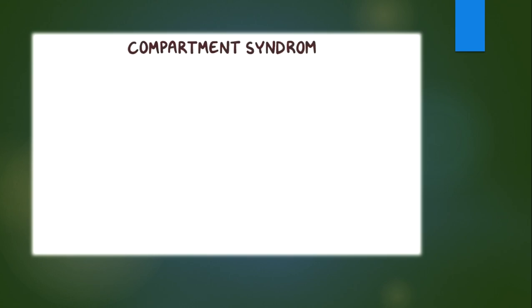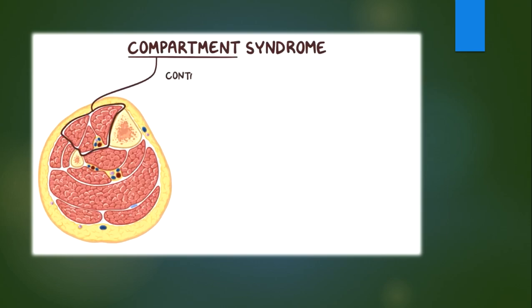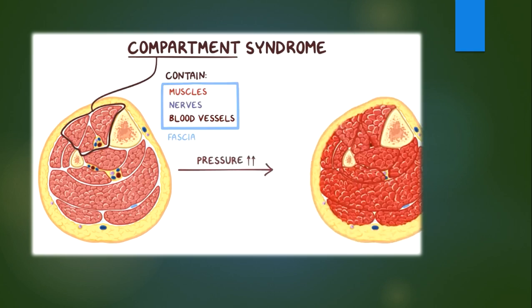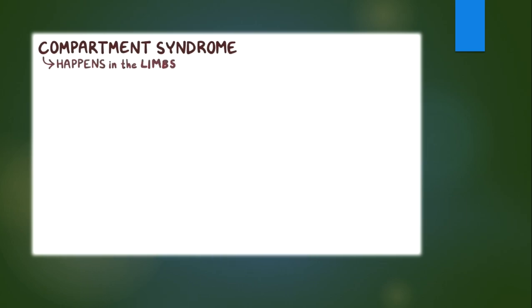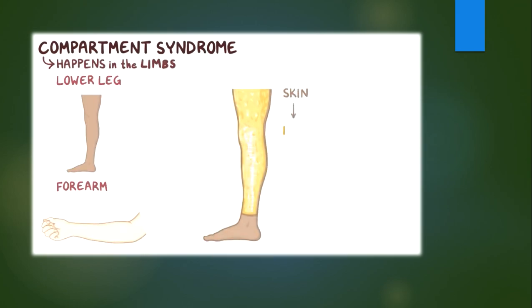With compartment syndrome, compartment refers to separate sections of the body that contain muscles, nerves, and blood vessels surrounded by a layer of fibrous connective tissue. When the pressure within these compartments rises, normal blood flow can be cut off, leading to tissue damage due to hypoxia or the lack of oxygen. Compartment syndrome typically happens in the limbs, usually in the lower leg or the forearm. If we remove the skin and then the fat from the lower leg, we would uncover the fascia. Fascia surrounds the muscles, keeping them tightly together while they contract to move the limb, and it also helps attach these muscles to the bones.